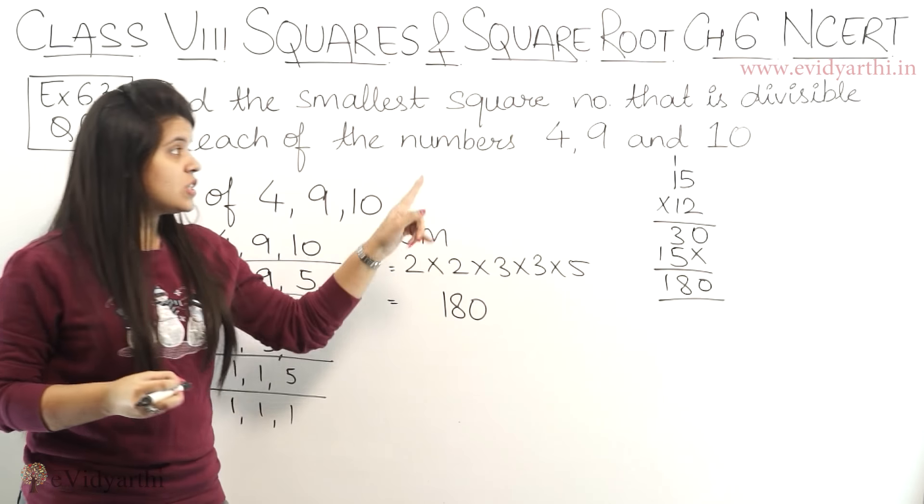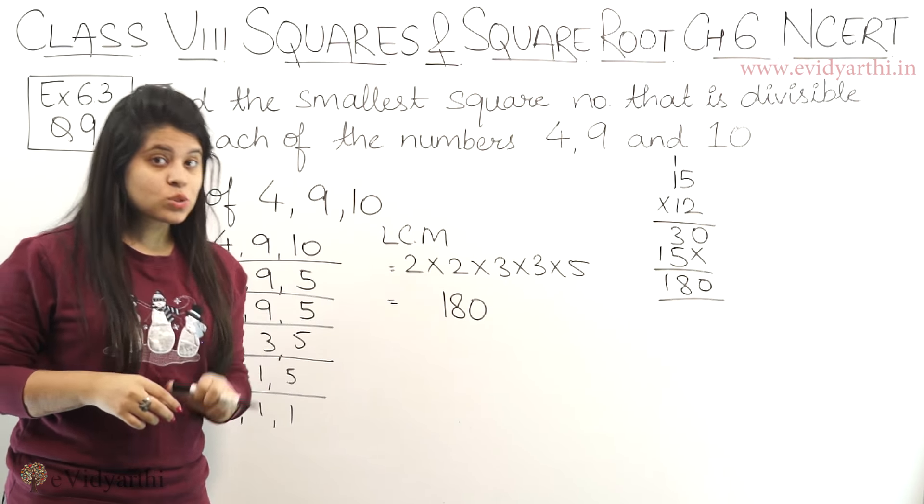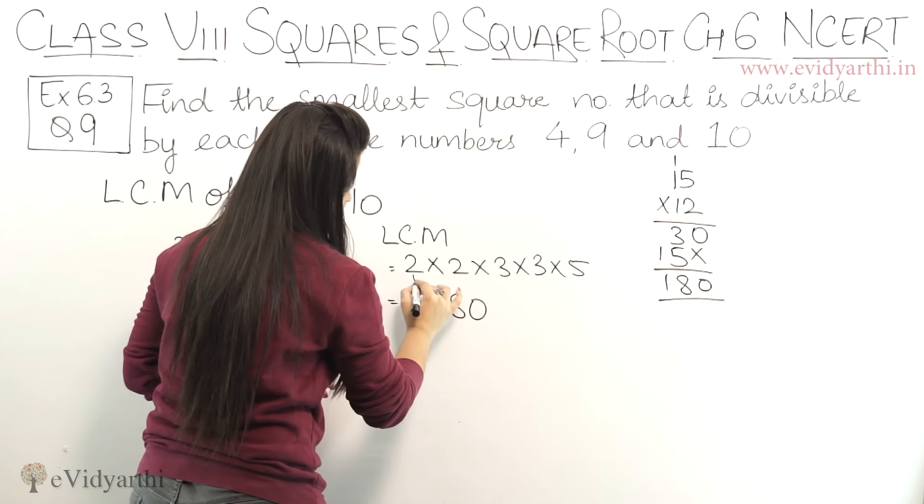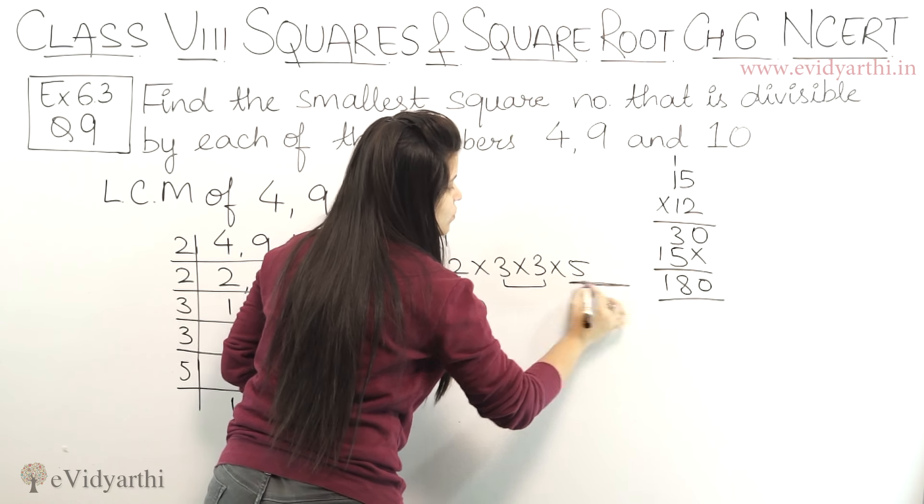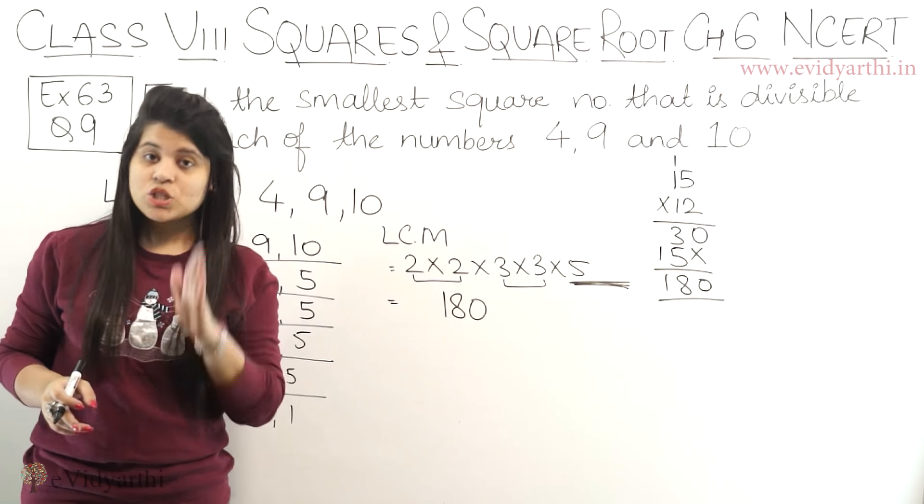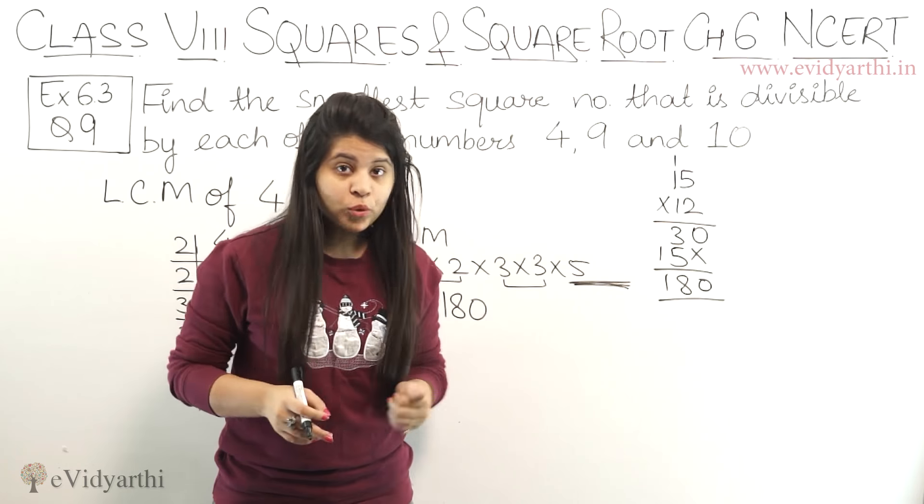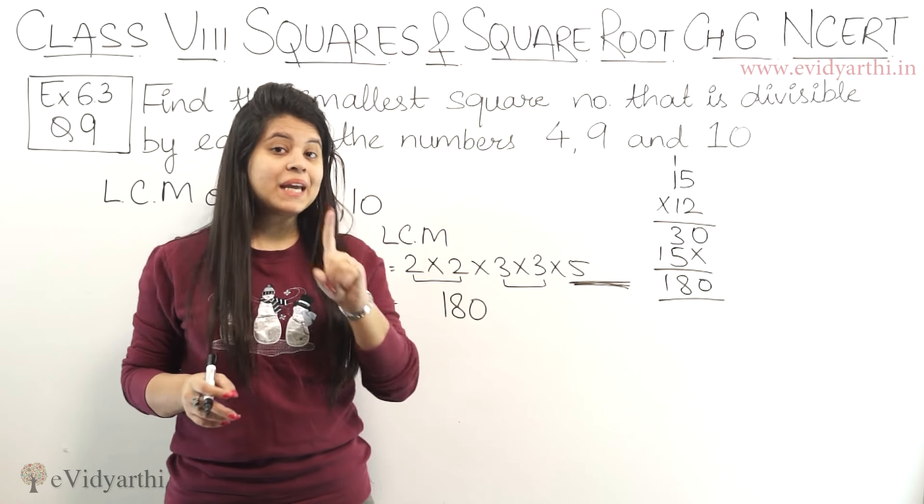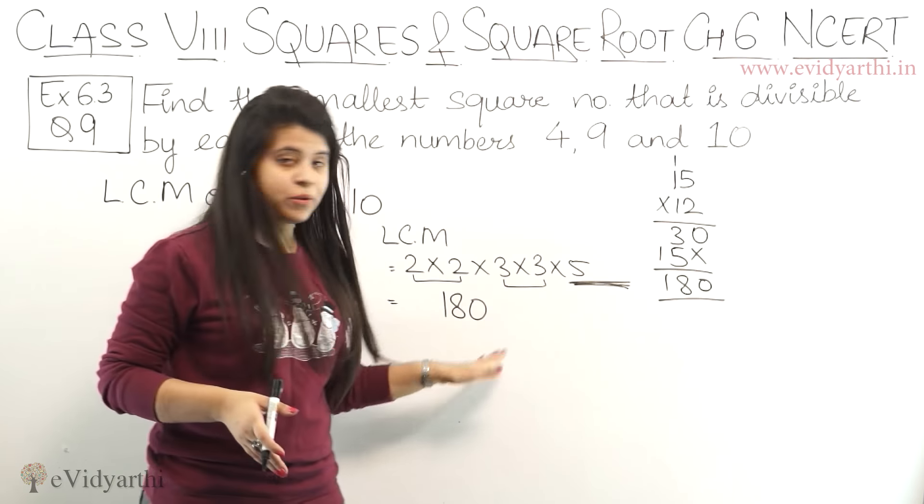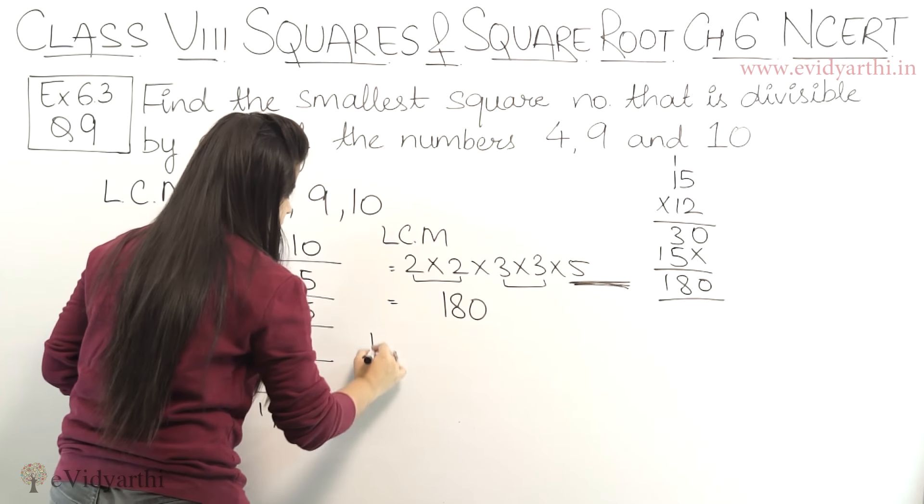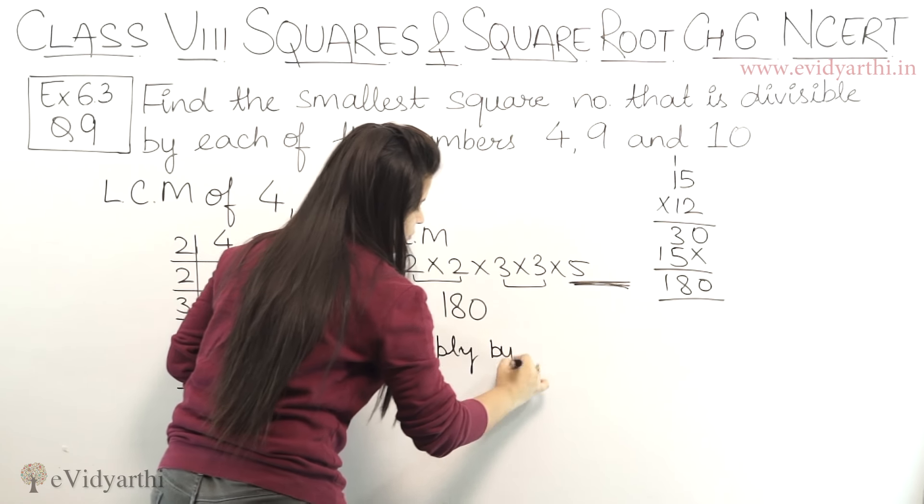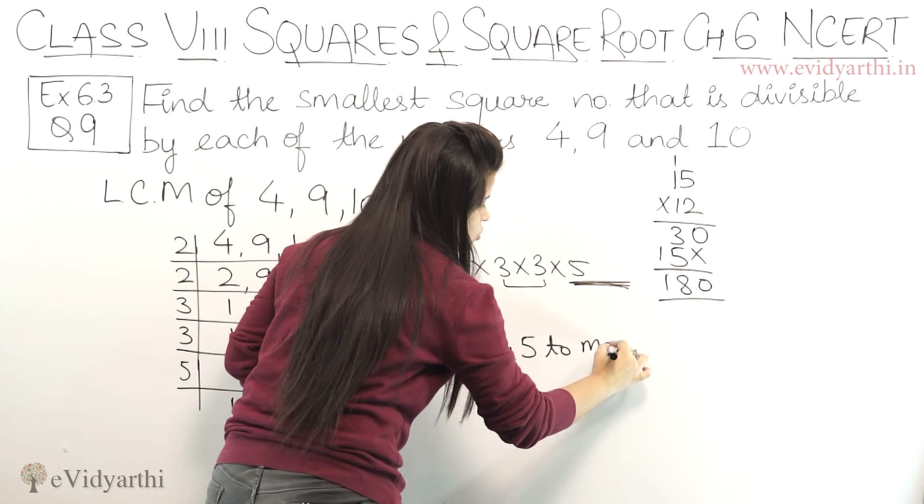Now we have to see this number which is divisible, but we have to check if it's a square number. So we have to make factor pairs. First pair, second pair. You will see that 5 is not paired. So this number is not a perfect square. Because if all pairs are here, then it is perfect square. But here one pair is missing. So if I multiply it by 5, it will be a perfect square.